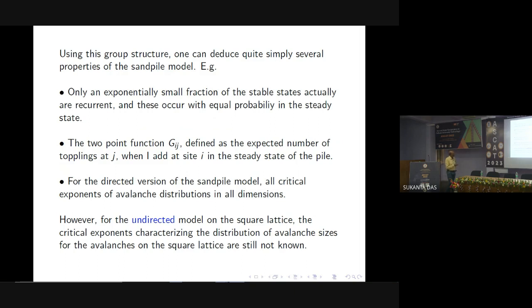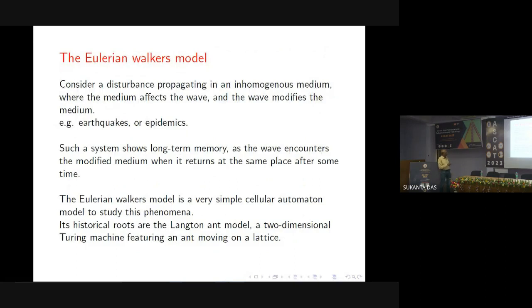But if you multiply a lot of as, you know you start with the configuration add something add something add something that is a 1, a 2, a 7, a 20 then you can take this string of a's which you multiply and then you can commute them and put all the powers of a 1 at one place. But if this power is more than 4 you can reduce the power by using this reduction group because bigger powers can be converted to smaller powers. And so then this semi group can actually be shown to be a finite abelian group acting on the set of recurrent configurations of the sandpiles. And then using this group structure one can deduce quite simply several properties of the sandpiles. These I will not explain in great detail. But it says that only a very small set of stable configurations are actually recurrent which occur again and again in the system and these occur with equal probability. The two point function gij which is defined as the expected number of topplings at j when I add at i can be calculated exactly. This is a response function you add something and this perturbation how much effect it has on some other site j. For the directed version of the sandpile you can actually calculate all the critical exponents of avalanches in all dimensions. However, for the undirected model on the square lattice this model is partly solved but not fully and now people still do not know the critical exponents of avalanches in this model even after so many years. So the model is not fully solved.